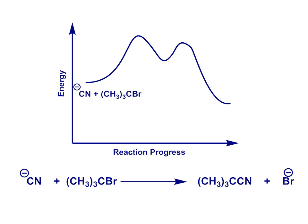Starting materials on the left again, the nucleophile and the alkyl halide. Products on the right. Now this local minimum is our intermediate, the tertiary carbocation, and let's not forget there are two transition states, one on either side of that carbocation intermediate.